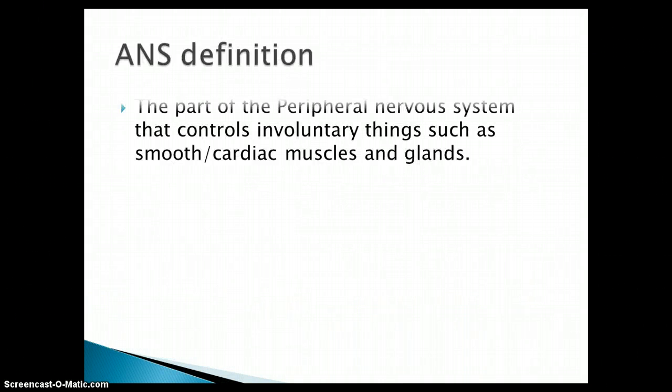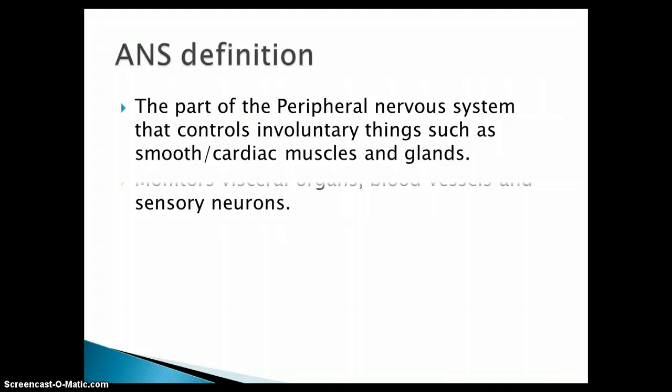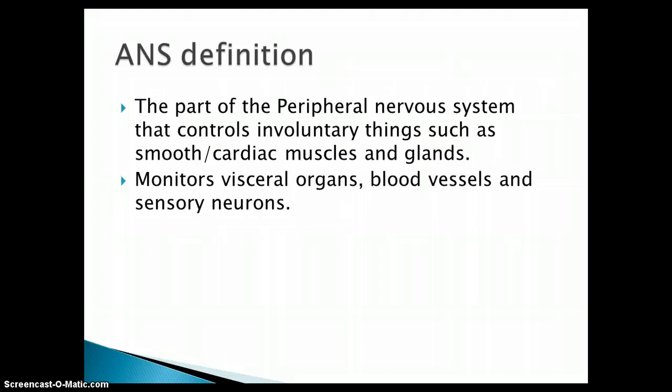So first, let's talk about the autonomic nervous system. It's part of the peripheral nervous system, and it controls involuntary things — cardiac muscle, smooth muscle, glands, and it also monitors visceral organs and blood vessels and sensory neurons.